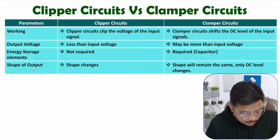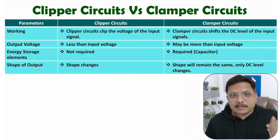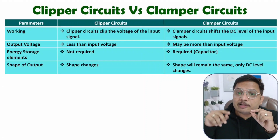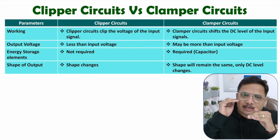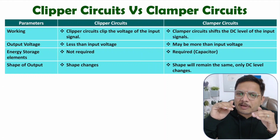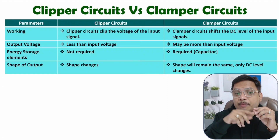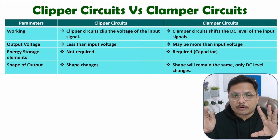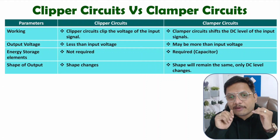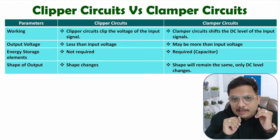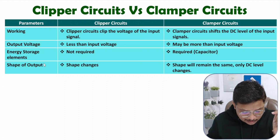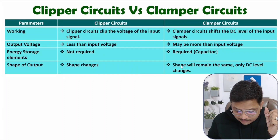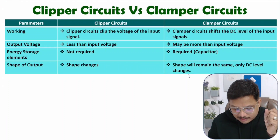The next parameter is the shape of output. In a clipper circuit, we will be changing the shape of the output — you will be clipping the positive half or the negative half of the waveform, so the shape of the output changes. In a clamper circuit, we don't change the shape of the output; we are only shifting the DC level of the input signal at the output side. So in clipper circuit, shape changes; in clamper circuit, shape remains the same.